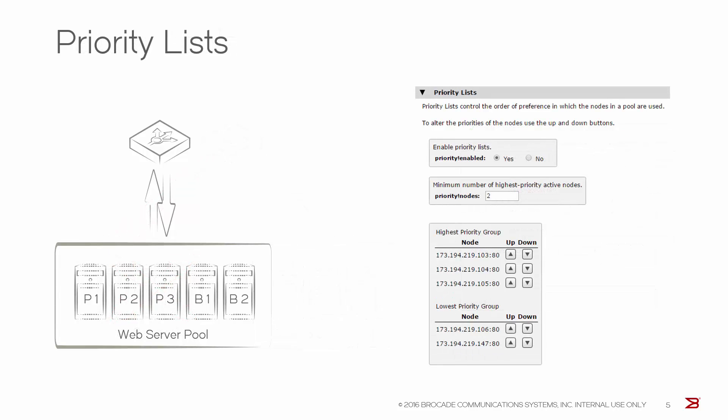Within a pool, Traffic Manager also supports a feature called priority lists. A priority list allows you to group the nodes in order of priority while also specifying the minimum number of machines you wish to receive traffic at any one time.